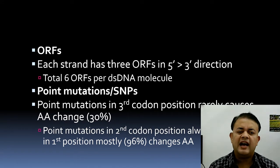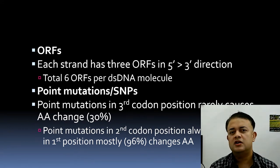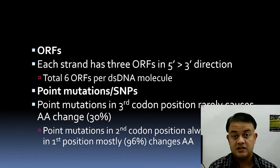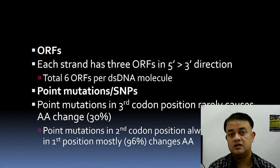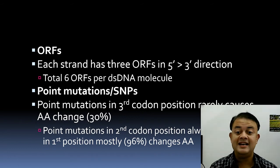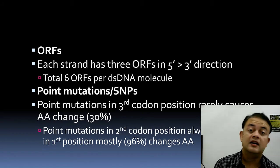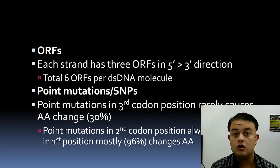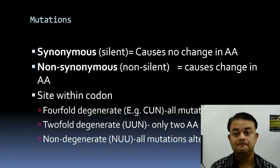The third codon position is highly degenerate — meaning mutations there are mostly synonymous. The second position, however, always changes the amino acid and is non-degenerate. The first position is also not highly degenerate: 96% of cases involve non-synonymous substitutions.